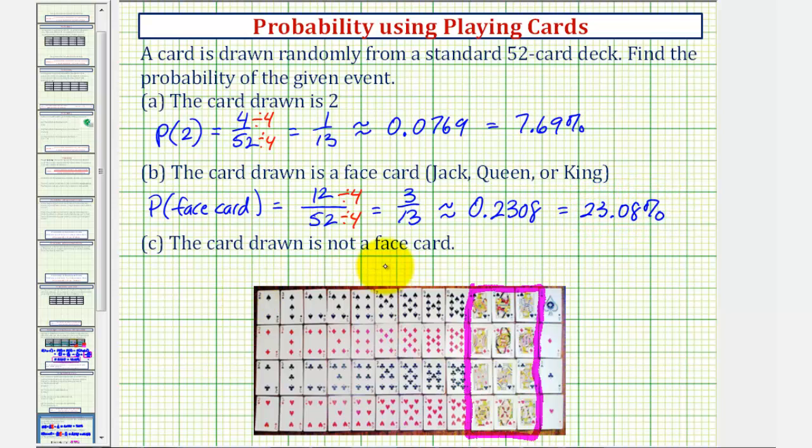And now for our last probability, we can actually do this two ways. We want to find the probability that the card drawn is not a face card. We'll first use just a basic probability formula. So the probability of not a face card would be equal to the number of non-face cards divided by the total number of cards, which we know is 52.